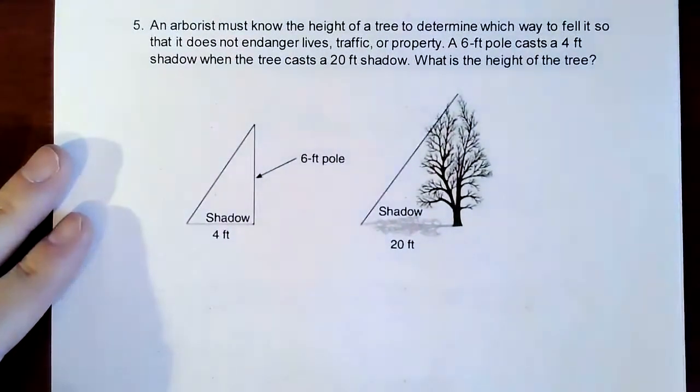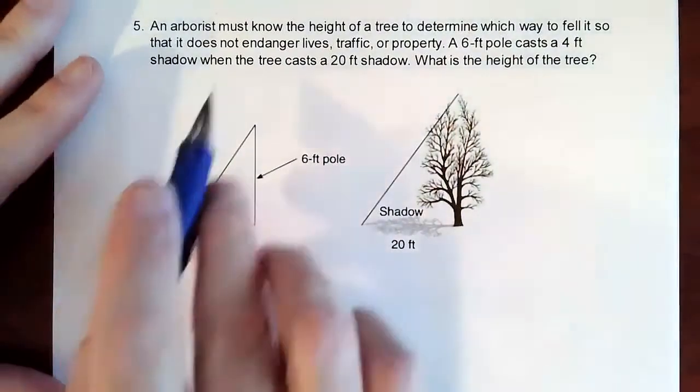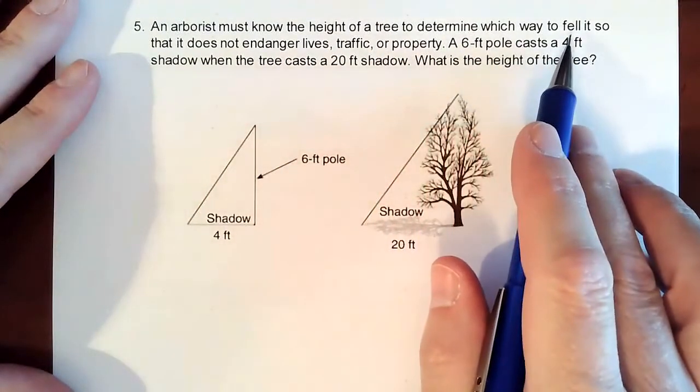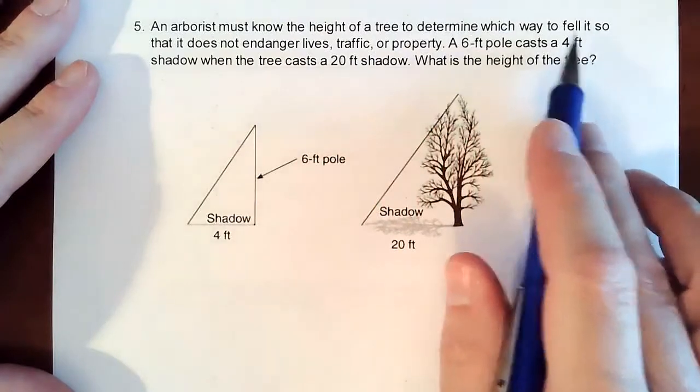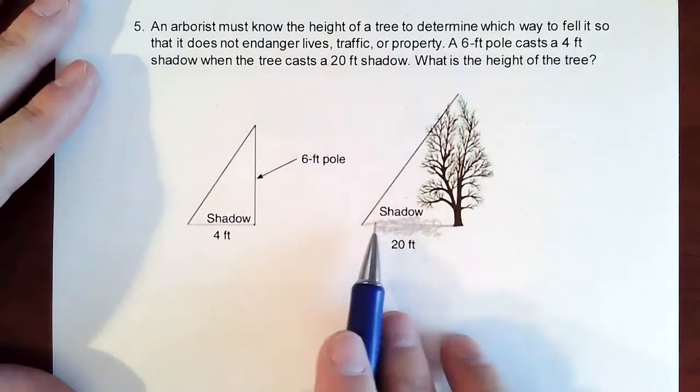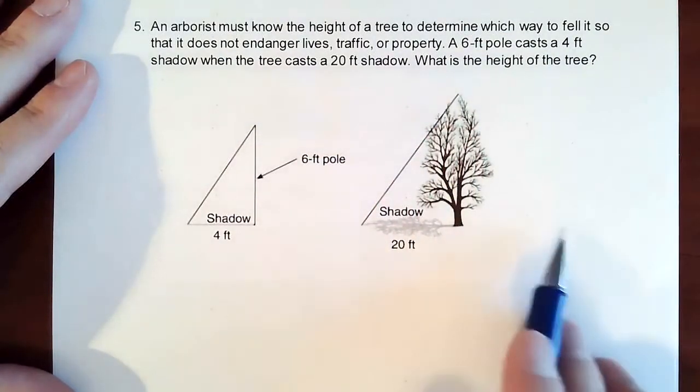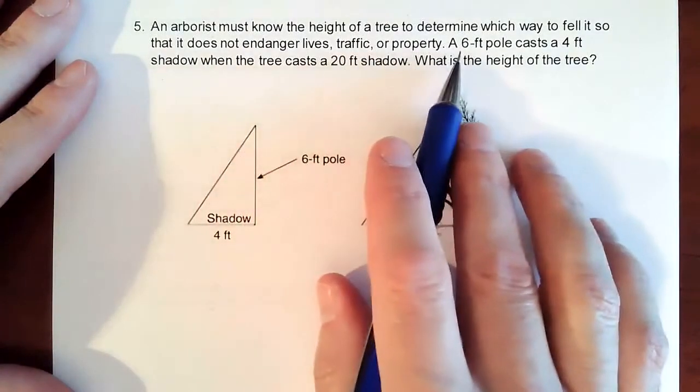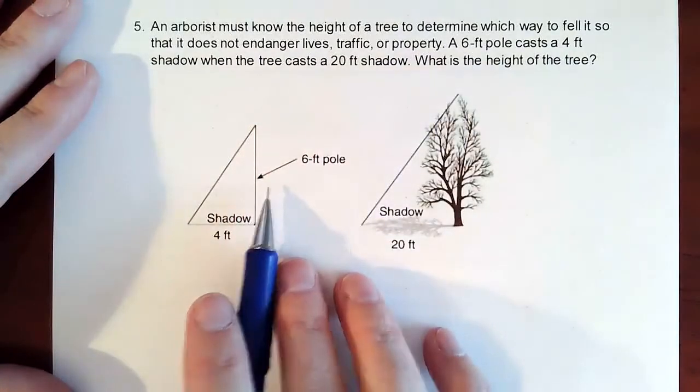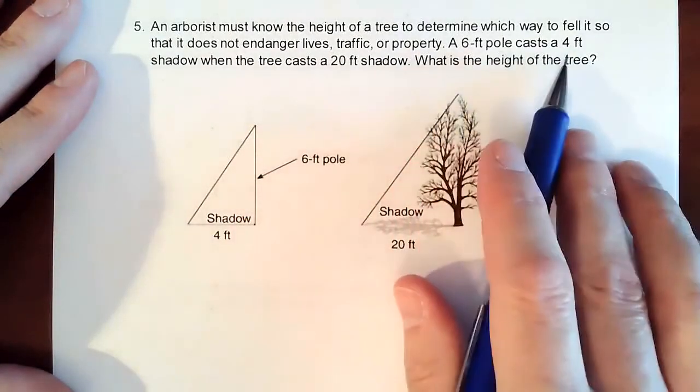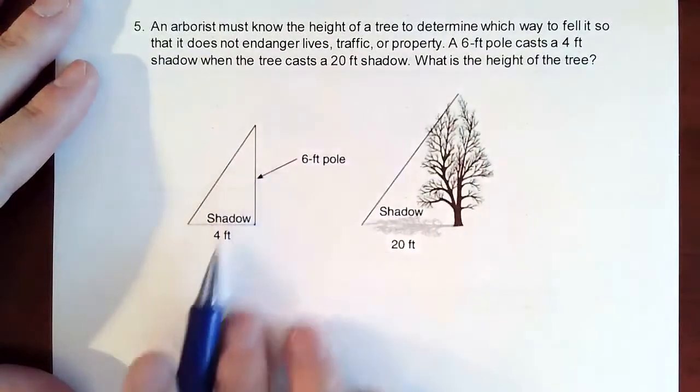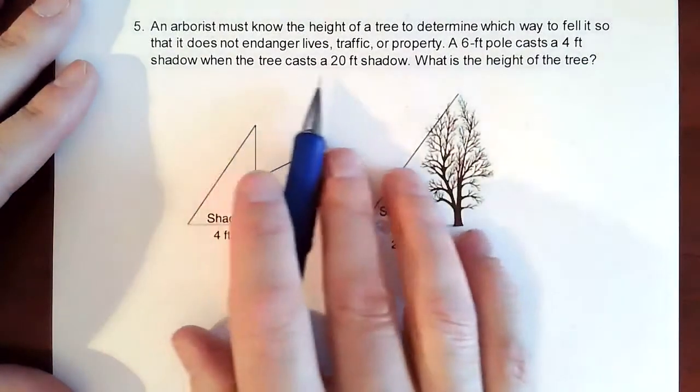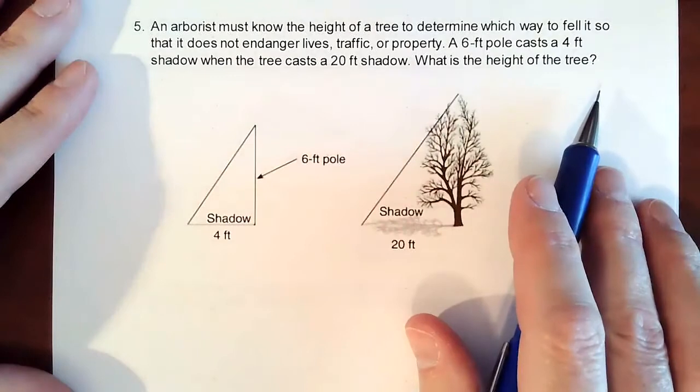If we have a problem, like we are trying to figure out the height of a tree, it says an arborist must know the height of a tree to determine which way to fell it. So we're chopping it down and we want it to fall. So how far is it actually going to fall? So we kind of keep that space to make it safe, so it does not endanger lives, traffic or property. We have a six foot pole that casts a four foot shadow. And when the tree casts a 20 foot shadow, what is the height of the tree?